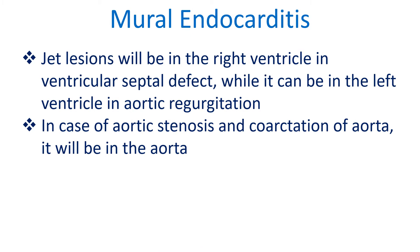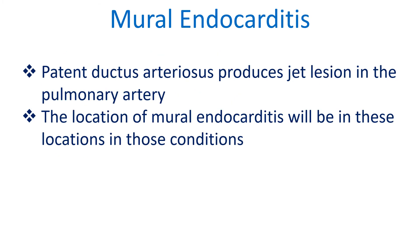The jet lesion will be in the right ventricle in ventricular septal defect, while it can be in the left ventricle in aortic regurgitation. In cases of aortic stenosis and coarctation of the aorta, it will be in the aorta. Patent ductus arteriosus produces a jet lesion in the pulmonary artery. The location of mural endocarditis will be in these respective locations in those conditions.